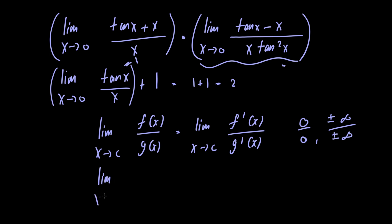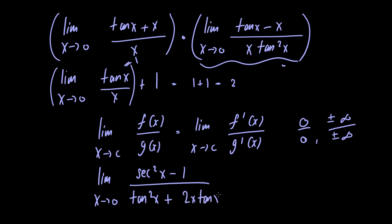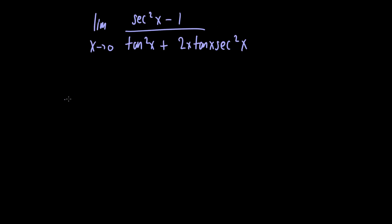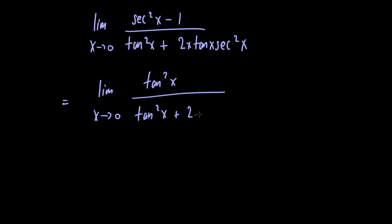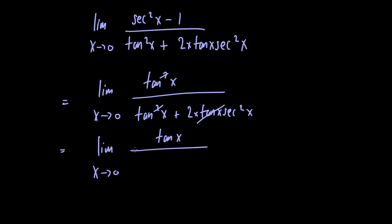Applying L'Hôpital's Rule, we get the limit as x goes to 0 of secant squared of x minus 1, divided by tangent squared of x plus 2x times tangent of x times secant squared of x. We can rewrite secant squared x minus 1 as tangent squared of x, then cancel a factor of tangent of x, leaving the limit as x goes to 0 of tangent of x divided by tangent of x plus 2x times secant squared of x.